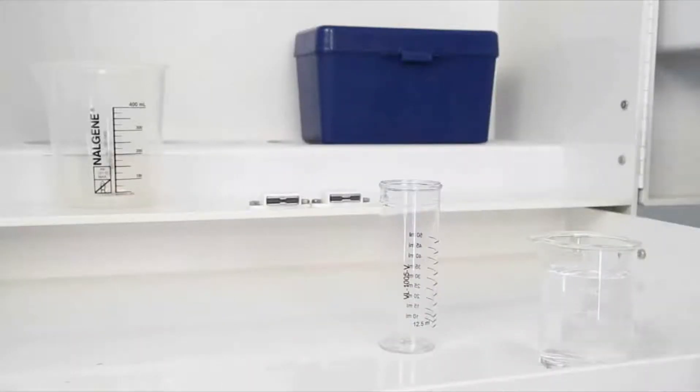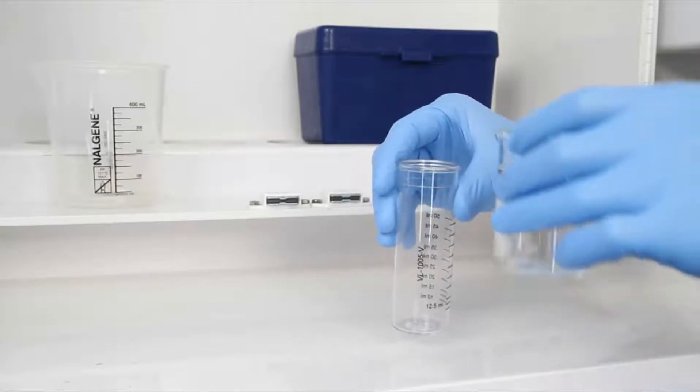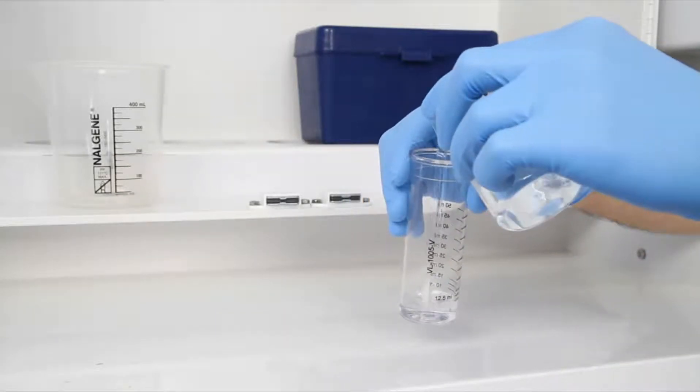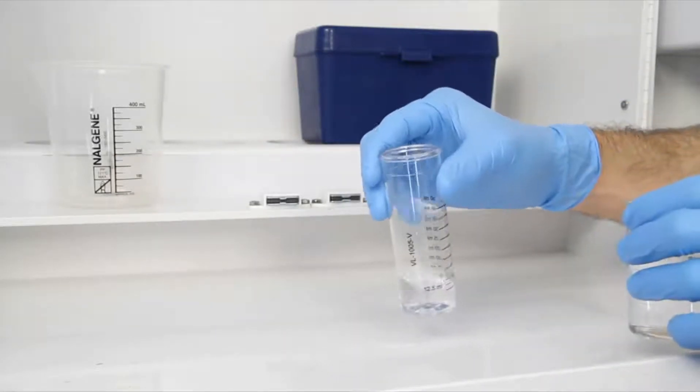The first step according to the Endpoint ID procedure is to gather an accurate sample. The smallest change in sample size will lead to inaccurate results.